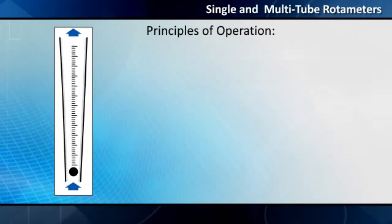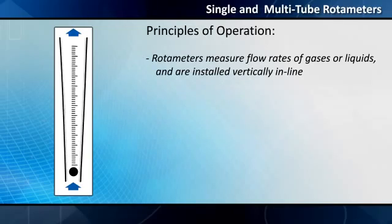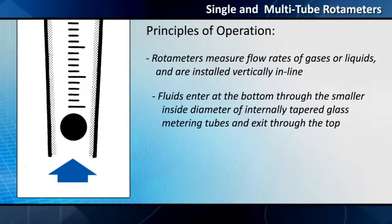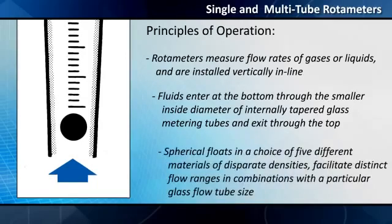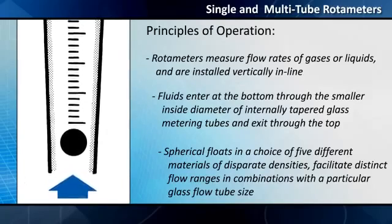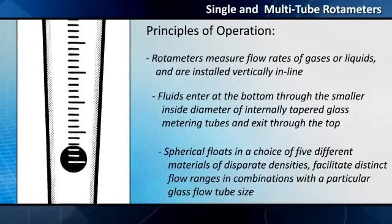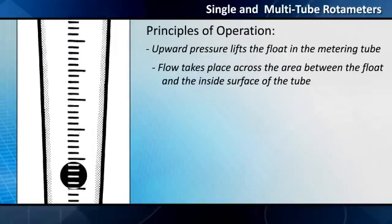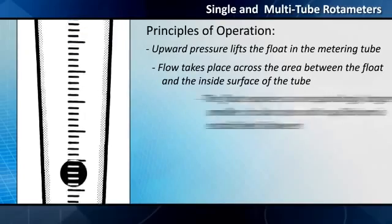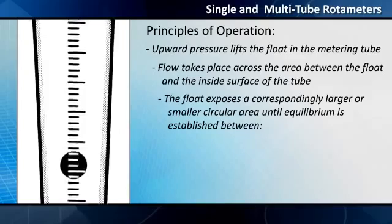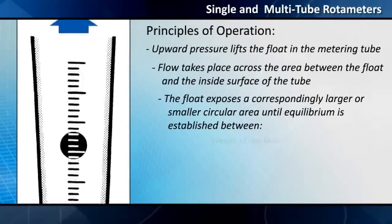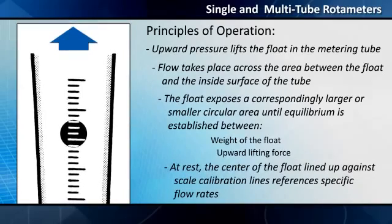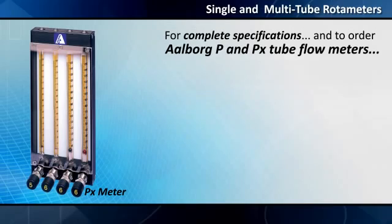Principles of operation: Rotometers measure flow rates of gases or liquids and are installed vertically in line. Fluids enter at the bottom through the smaller inside diameter of internally tapered glass metering tubes and exit through the top. Spherical floats in a choice of five different materials of disparate densities facilitate distinct flow ranges and combinations with a particular glass flow tube size. Upward pressure lifts the float in the metering tube. Flow takes place across the area between the float and the inside surface of the tube. As flow rates change, the float exposes a correspondingly larger or smaller circular area until equilibrium is established between the weight of the float and the upward lifting force on it. At rest, the center of the float lined up against scale calibration lines references specific flow rates.